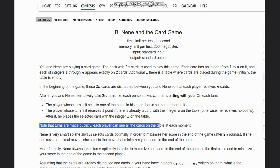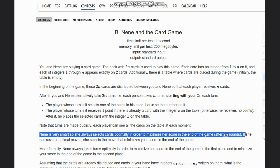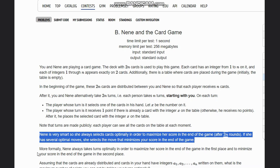Note that turns are made publicly. Each player can see all the cards on the table at each moment. Neen is very smart, so she always selects cards optimally in order to maximize her score at the end of the game. If she has several optimal moves, she selects the move that minimizes your score at the end of the game.